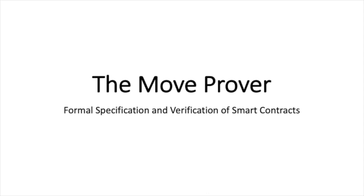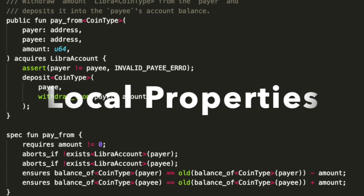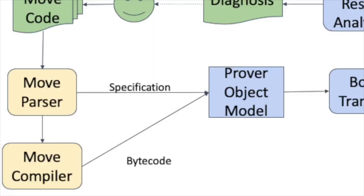The MoveProver is a formal verification system for smart contracts on the Libra blockchain. The smart contracts are written in the Move language with features that ensure safety and facilitate easier verification. Using the MoveProver, developers can specify both local properties, including the pre-post conditions and aborting conditions of individual functions, as well as global properties applicable to the entire module.